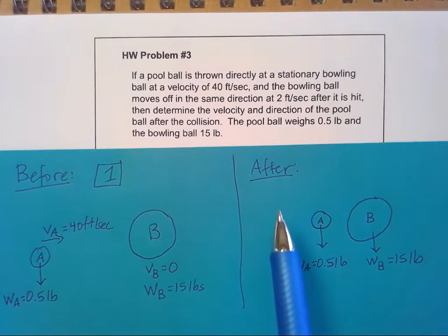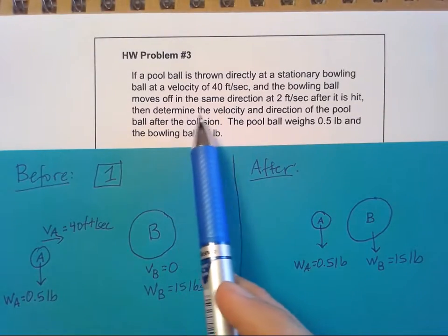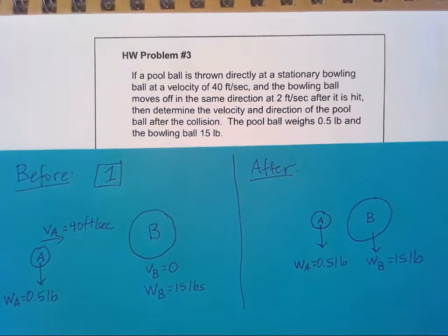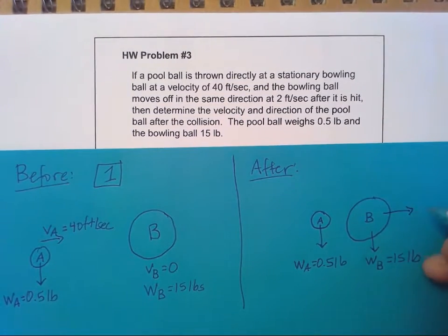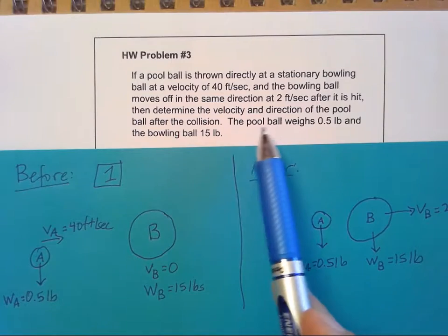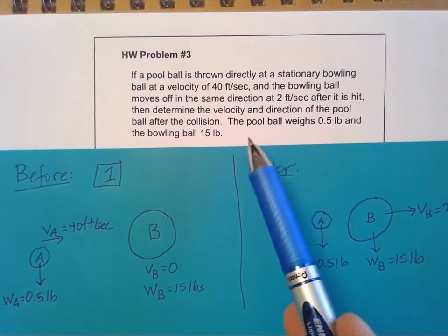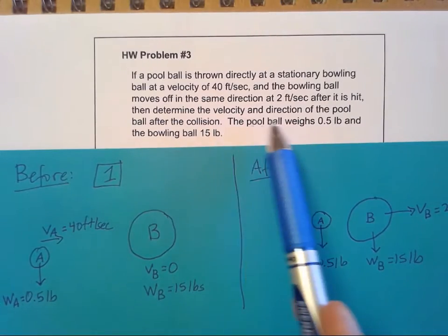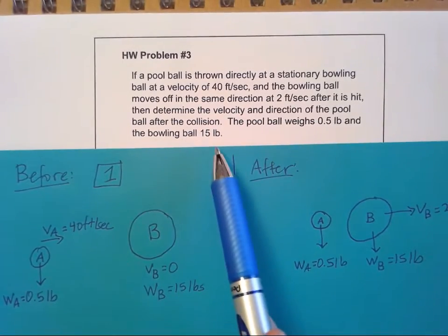But afterwards, we're going to have the bowling ball moving off in the same direction as the pool ball was thrown at two feet per second. So I'm going to have this velocity of B equal to two feet per second. And then I'm going to have the pool ball at some velocity that I don't know. It asks me here to determine the velocity and direction of the pool ball after the collision.